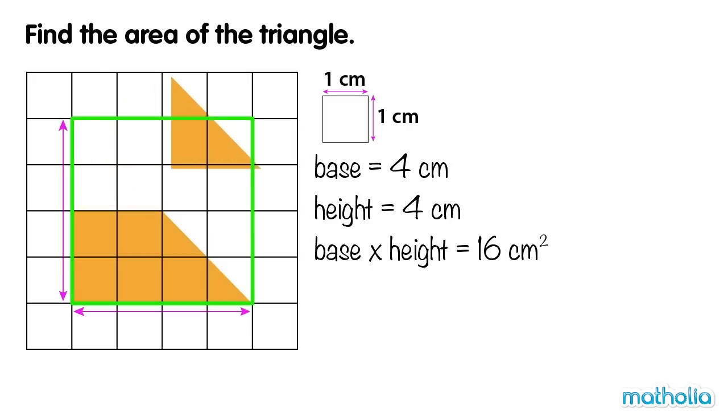We can cut a piece of the triangle and arrange it to form a rectangle. We can see that the area of the rectangle is 8 cm squared.